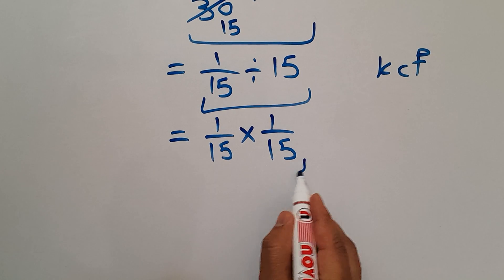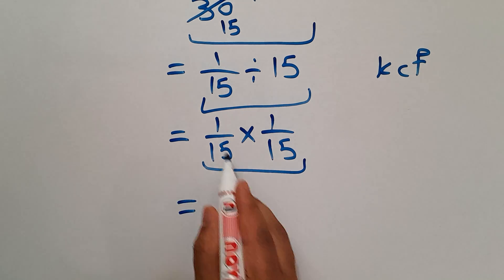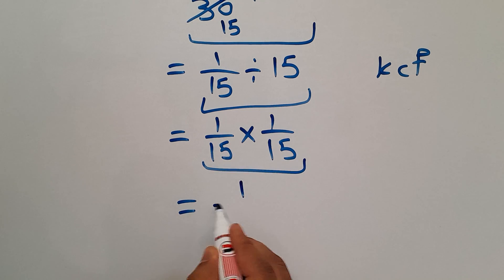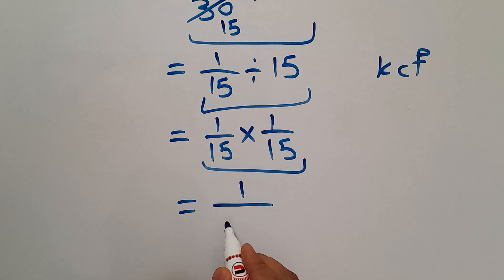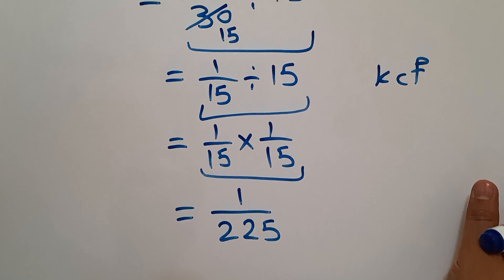And this is equal to 1 times 1 gives us 1 over 15 times 15 equals 225. So our final answer to this problem is 1 over 225.